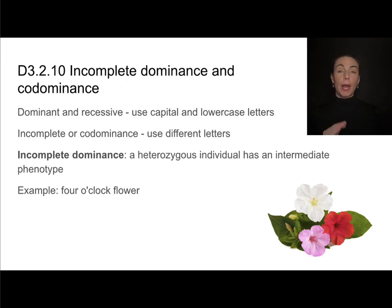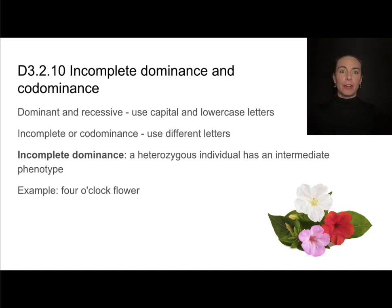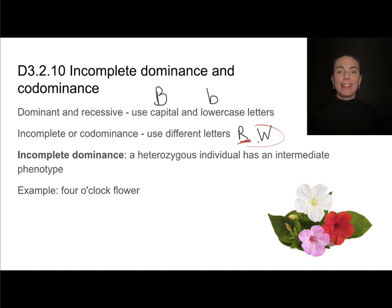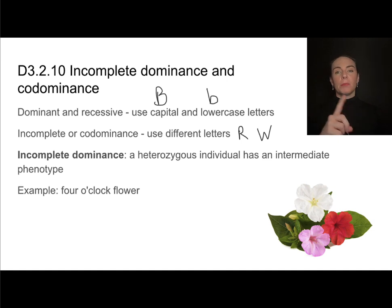We've talked about regular dominant and recessive, and also co-dominance. You may have noticed that the genotype notation was written differently. When a gene is just dominant or recessive, we use capital and lowercase letters. For co-dominance or incomplete dominance, we use different letters — for example, W and R — both uppercase and different from each other. When you see that notation, it's an early sign that the gene does not follow a typical dominant and recessive pattern.